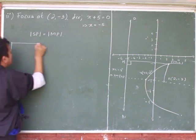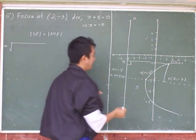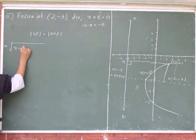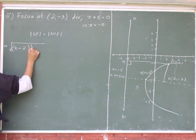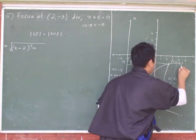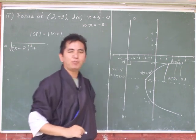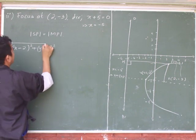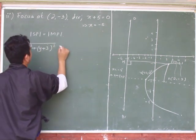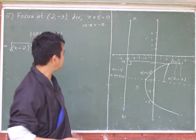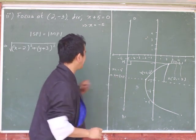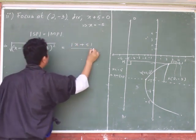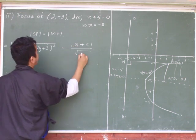The definition of the parabola states that |SP| equals |MP|. SP is the distance between two points, which equals the square root of (x minus 2) squared plus (y minus (-3)) squared, which is (x minus 2) squared plus (y plus 3) squared. MP is the perpendicular distance to the directrix, so it equals the modulus of (x plus 5) divided by the square root of 1.